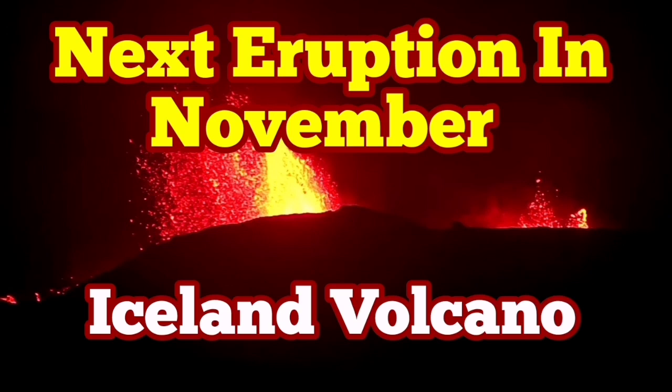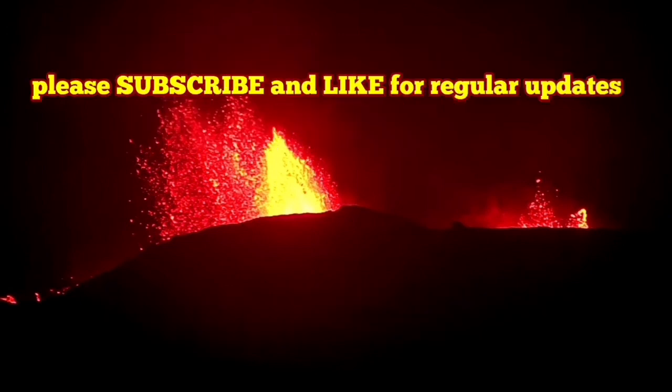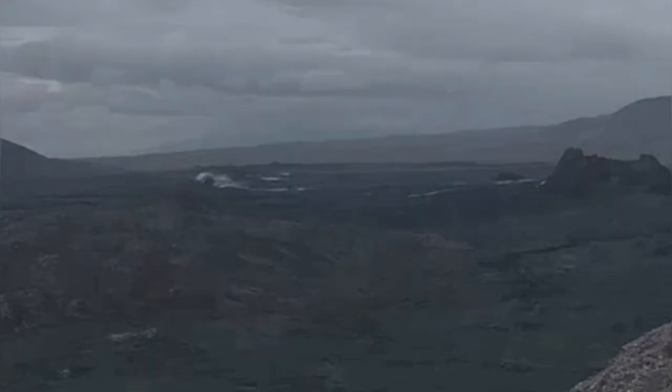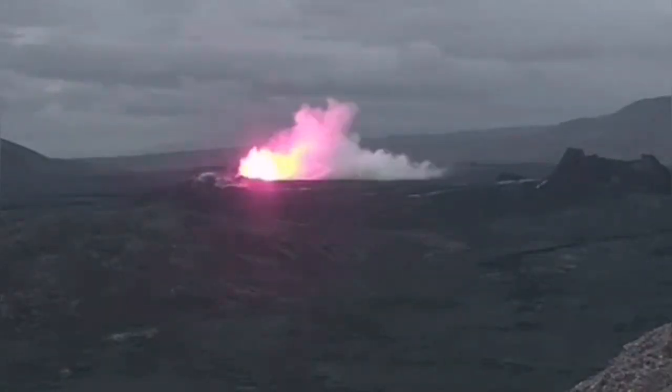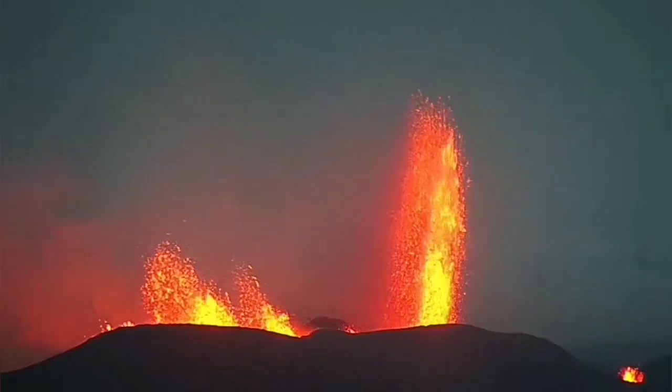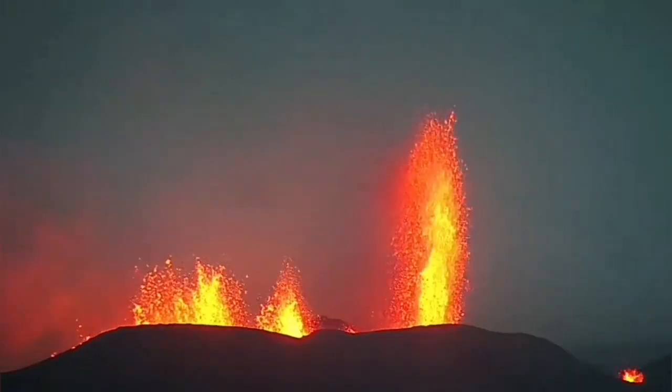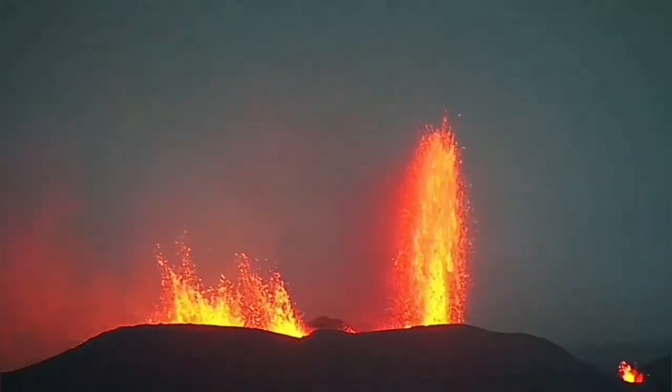The sixth eruption of the Svartsangi volcanic system in the Reykjanes Peninsula of Iceland started vigorously and created huge fountains up to 175 meters tall. In the night you could see them from far distance.